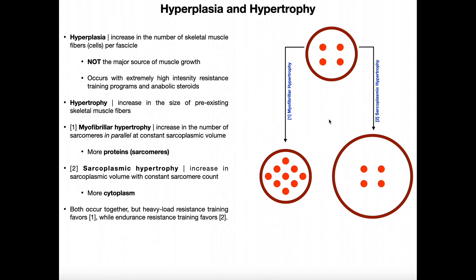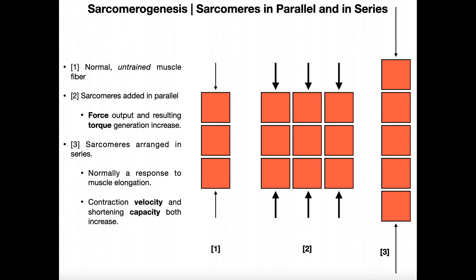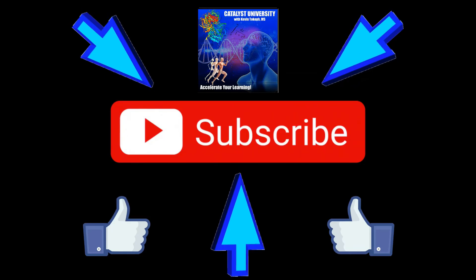Nothing in physiology is ever an isolationism. Hopefully this video gave you a good understanding of hyperplasia and how it really doesn't contribute very much to muscle growth, and the two types of hypertrophy. In the next video, we're going to explore the concepts of sarcomeres in parallel and sarcomeres in series — so join us then. Please make sure to like this video and subscribe to my channel for future videos and notifications. Thank you.